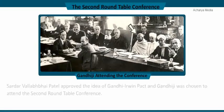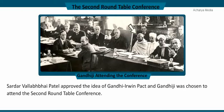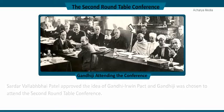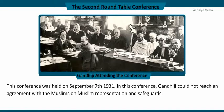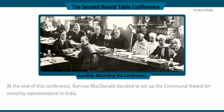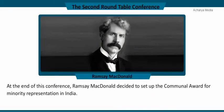Sardar Vallabhbhai Patel approved the idea of the Gandhi-Irwin Pact and Gandhiji was chosen to attend the Second Roundtable Conference. This conference was held on September 7, 1931. Gandhiji could not reach an agreement with the Muslims on Muslim representation and safeguards. At the end of this conference, Ramsay MacDonald decided to set up the Communal Award for minority representation in India.